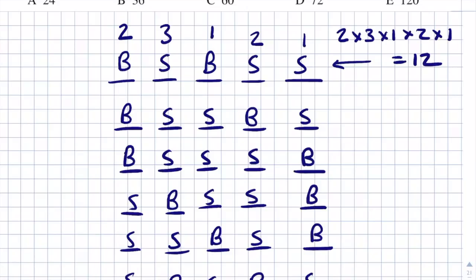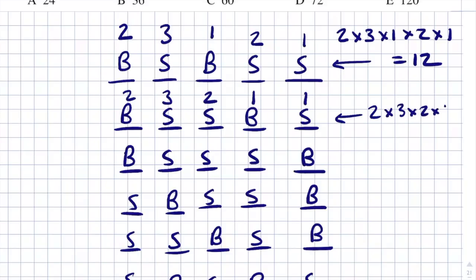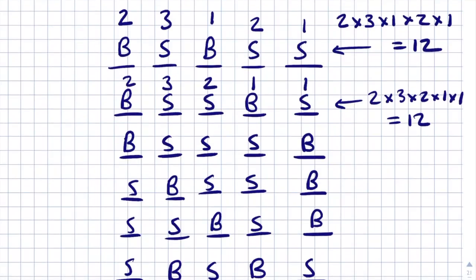The total number of permutations is the same for each scenario — 12 per scenario. For scenario 2, it also works out to 2 × 3 × 2 × 1 × 1 = 12. We have 6 possible scenarios, each with 12 permutations, so the total number of lineups is 12 × 6 = 72.